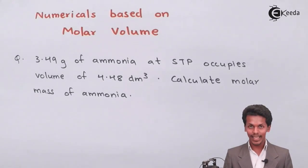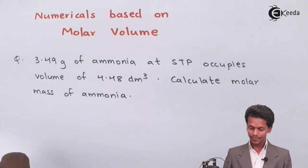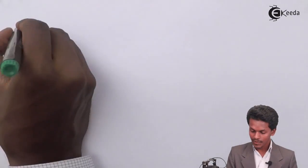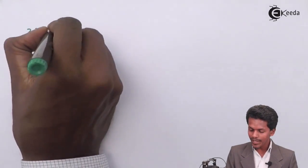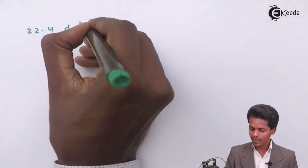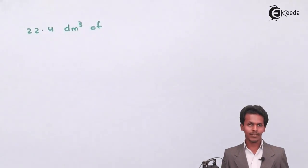We know from Avogadro's law that 22.4 dm³ of any gas will occupy one mole of the substance.